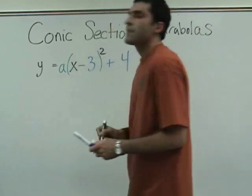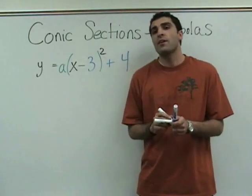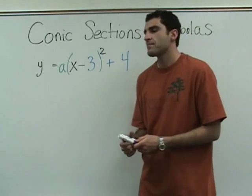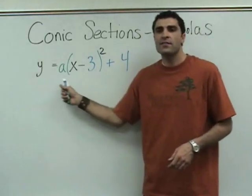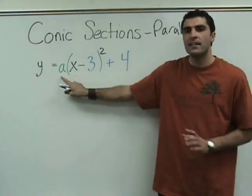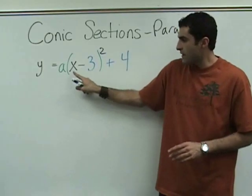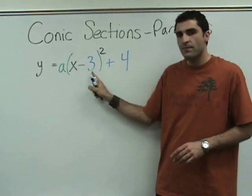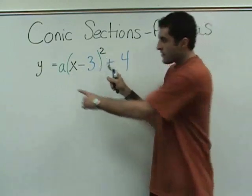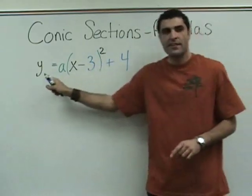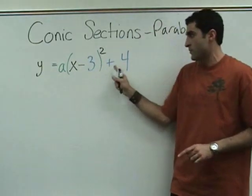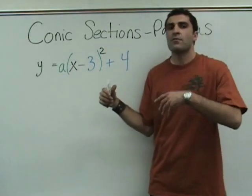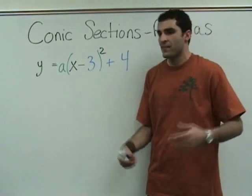These are generally called K and H, but I'm going to use numbers. So this is a parabola. Notice A could be any number — we'll talk about that. It's X minus or plus a number, squared. That creates our Y equals X squared. Plus 4. So this is like a parabola with all the trimmings — moonroof, GPS, XM radio.